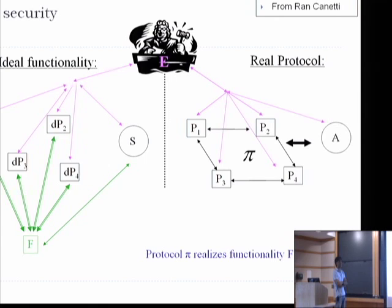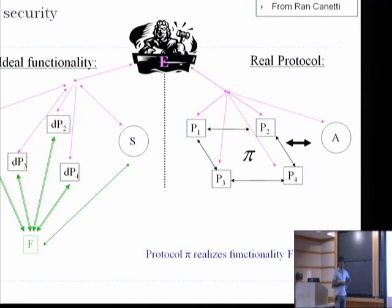The main idea is that there is an environment which is driving the whole experiment. That's a distinguishing feature from standalone definitions of security. What enables composability is the following: you are given a real-world protocol and you want to say something secure about it. The specification is given in terms of ideal functionalities. These are mostly multi-party computations, though it could be single-party too, but it makes more sense in multi-party settings.